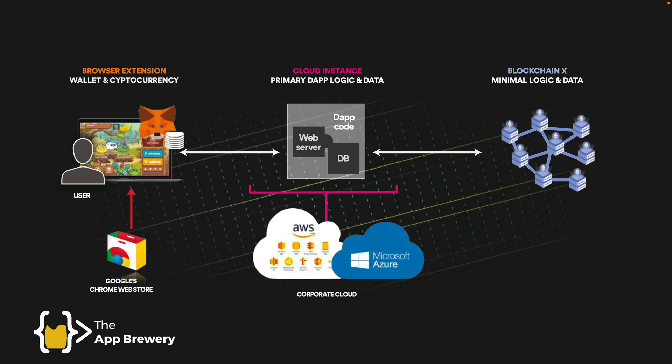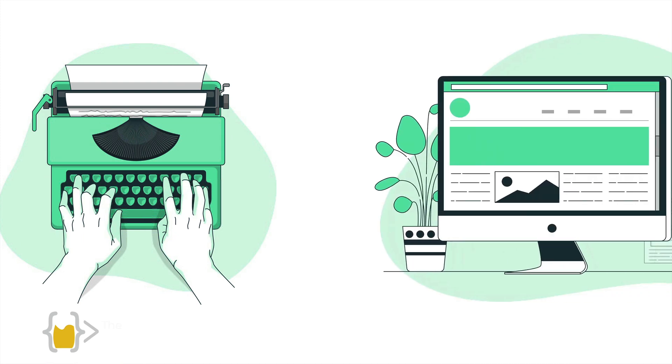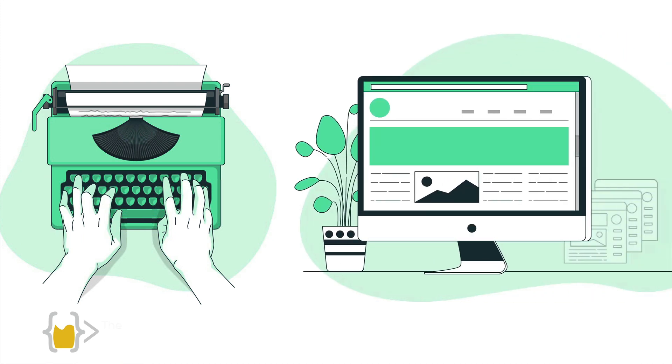If the majority of a dApp is not on-chain, then it's not really decentralized and it doesn't have all the benefits offered by a truly decentralized application. That means any of these companies — Amazon, Microsoft — can actually shut down your project just by snapping their fingers.